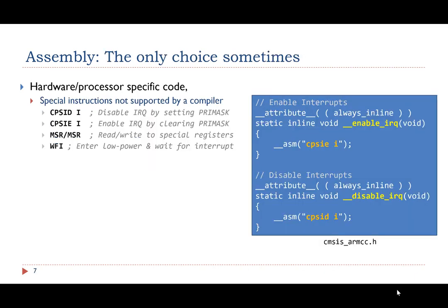The third reason is that sometimes we have to use assembly. Here I am going to show three examples. First, some special processor-dependent instructions are not supported by standard compilers — these instructions are outside the standard instruction set used by compilers. To support these instructions, we can insert them inline in C code. This is called inline assembly, and here are two examples.